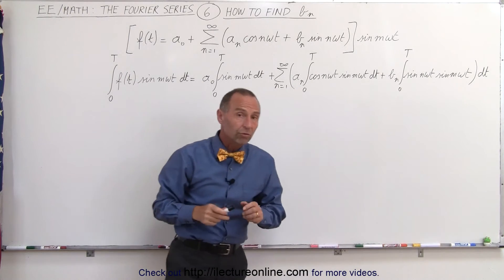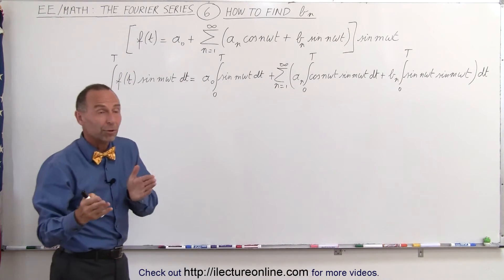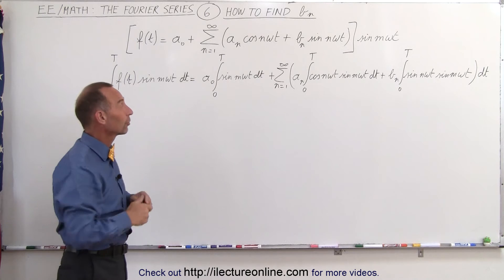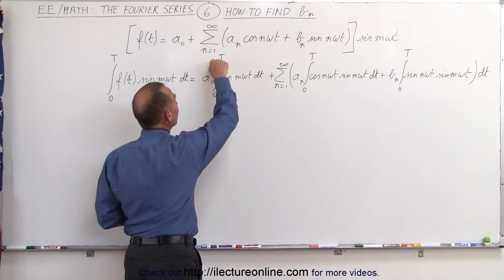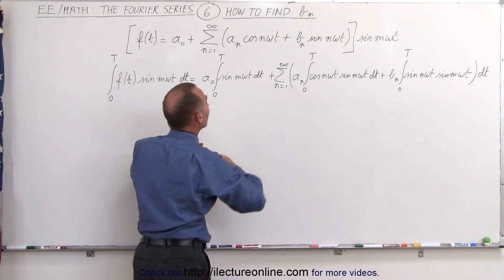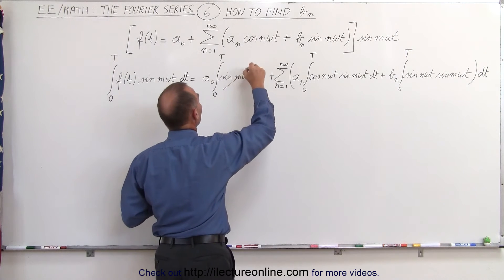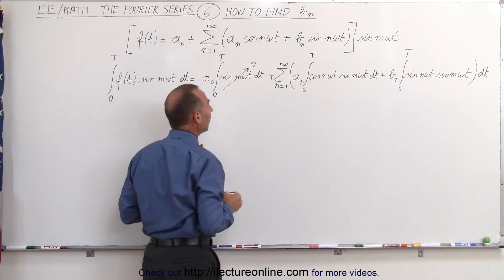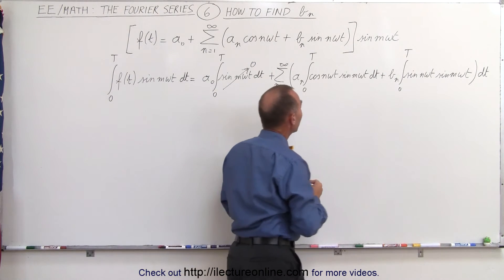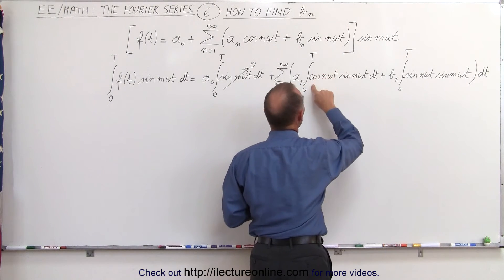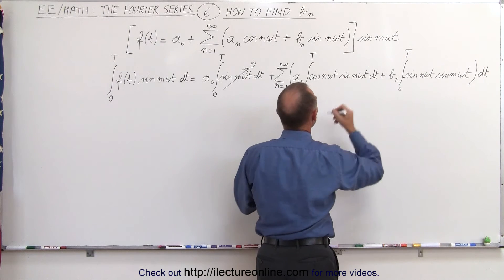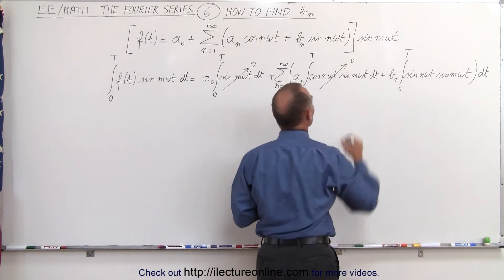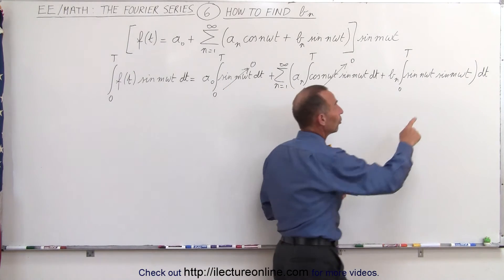Now, if you remember the rules from video 3, and if you don't, you may want to go back and take a look at video 3. There we realize that if we take the integral from 0 to T of the sine of m omega t, that is equal to 0, so this term simply drops out. And when we integrate from 0 to T of the cosine of n omega t times the sine of m omega t, that drops out as well. This term also becomes 0.